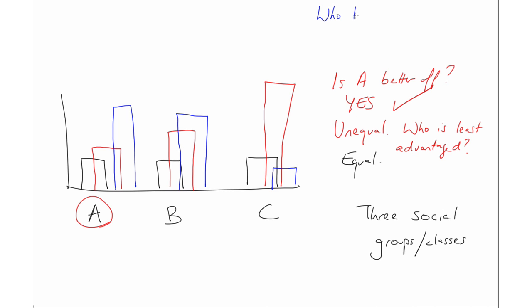But you don't just continue to consider group A as the least advantaged, because they were under one distribution. You now ask again, under this particular distribution, who's worst off? The answer is C.